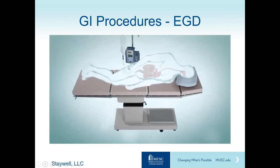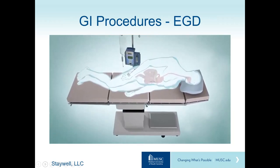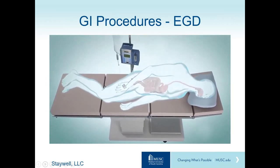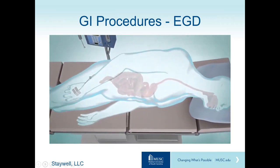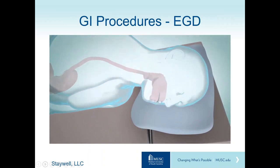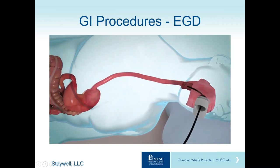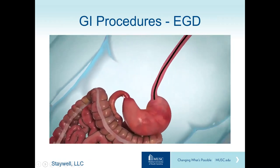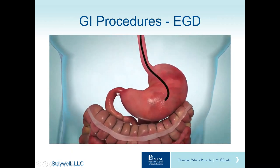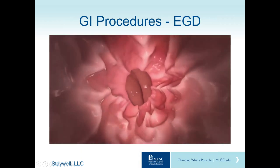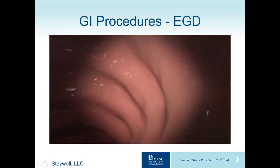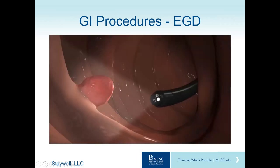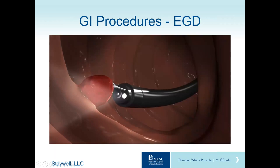An upper endoscopy takes about 20 to 30 minutes. Sedation is typically given through an IV line. The throat may be numbed with a spray or liquid, and a plastic guard is placed to protect the teeth. During the test, the patient lies on the left side while the endoscope is passed through the mouth and down the throat. Air expands the GI tract for clearer visualization. The provider examines the esophagus, stomach, and duodenum for bleeding, inflammation, or growths, and may take small tissue biopsies or remove growths.